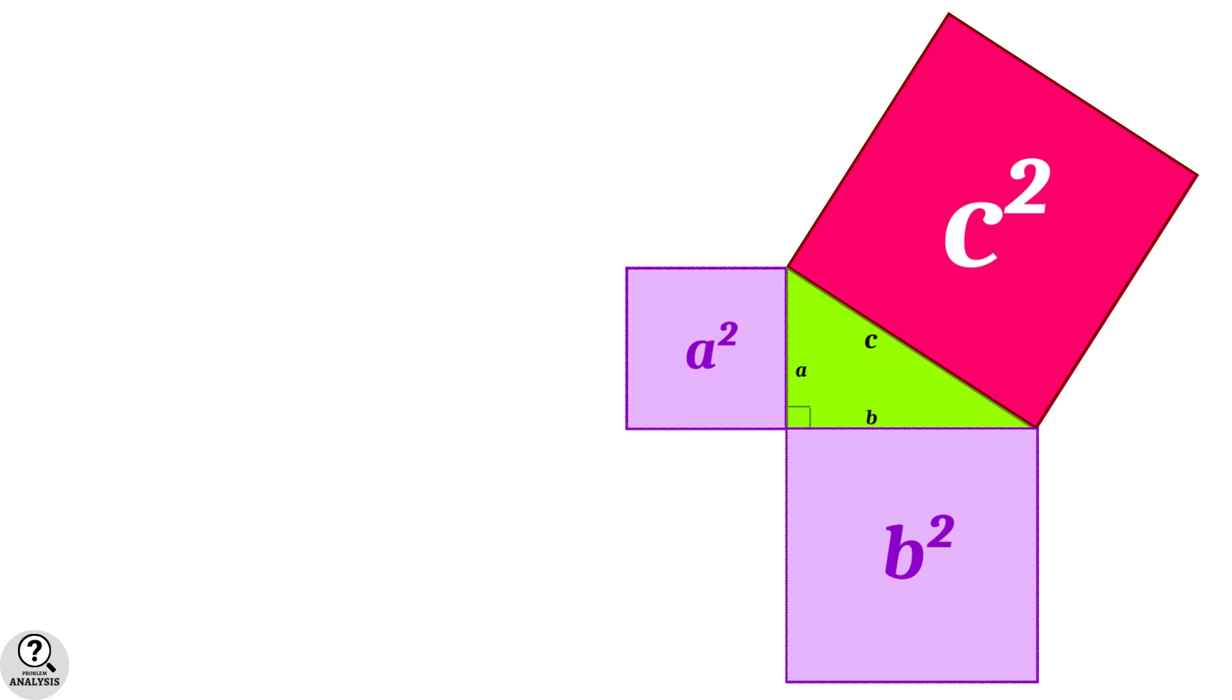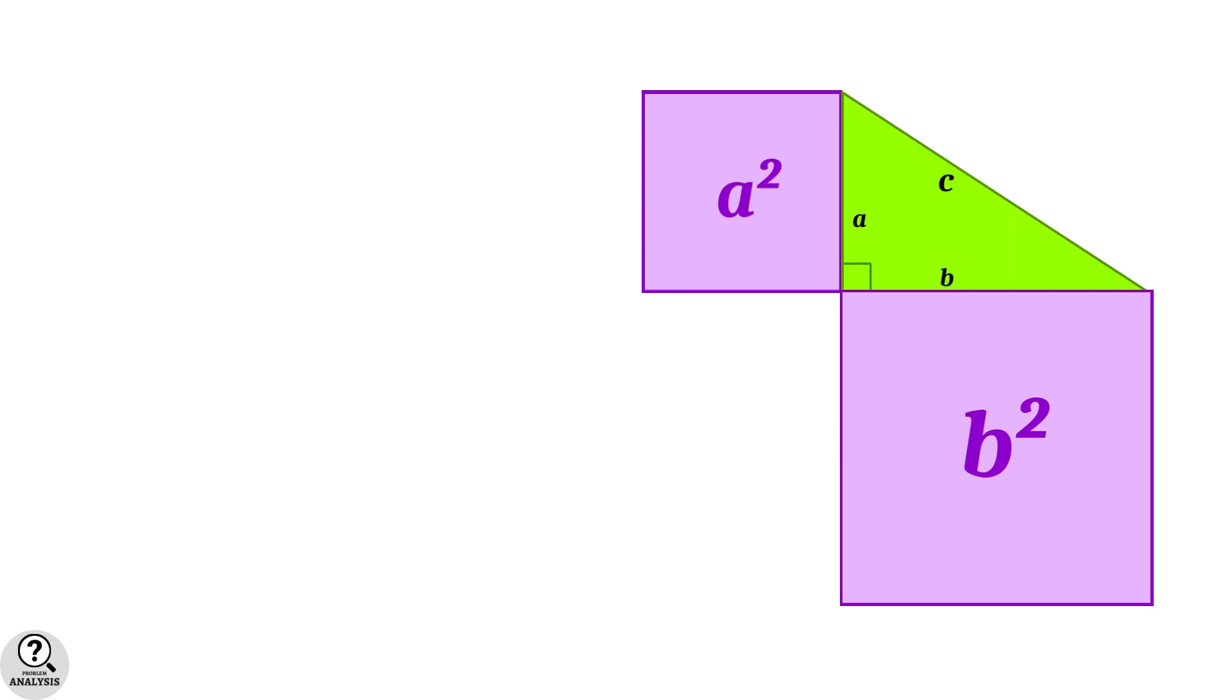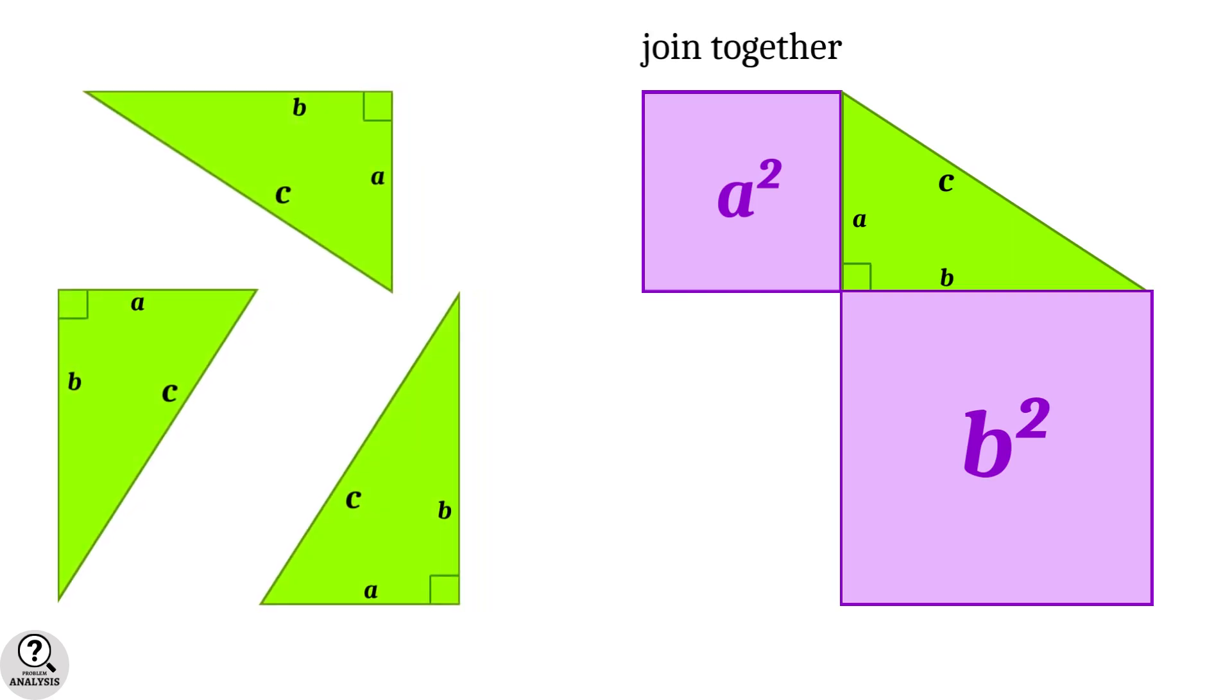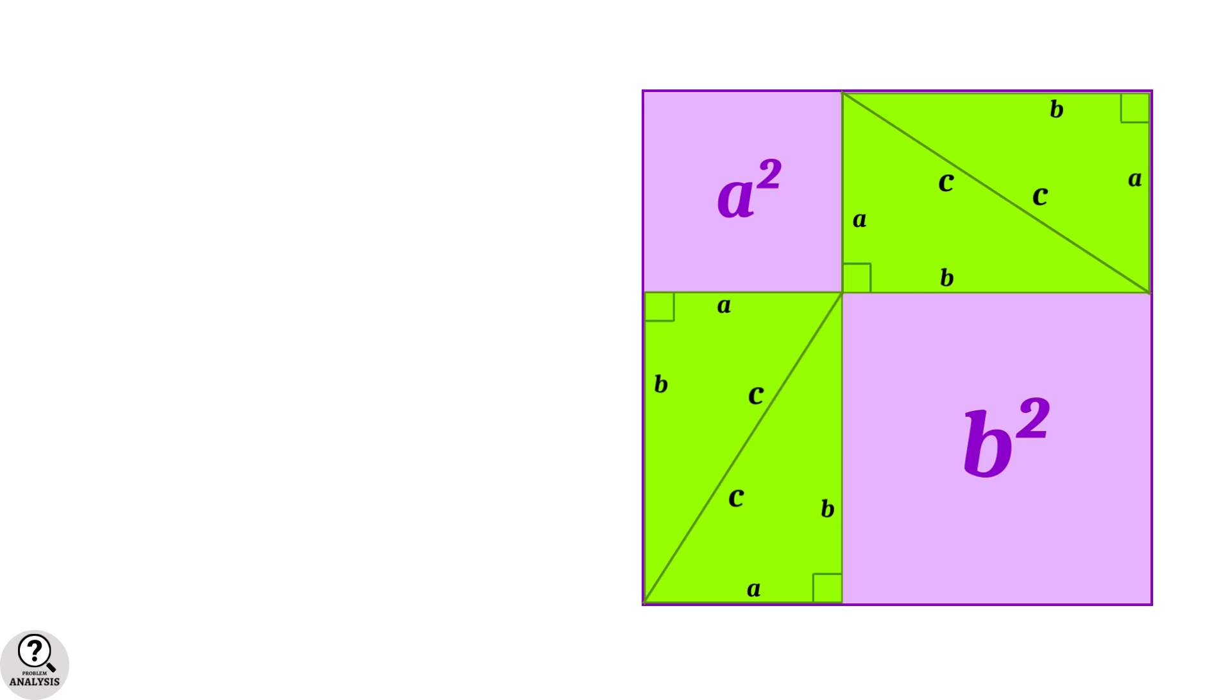Let's see how. For that, consider the right triangle and the two smaller squares. Then, I am taking three more copies of the right triangle. Now, join them with the squares like this. One above the triangle and the remaining two between the squares. So, what we get in final is a square of side length a + b units.